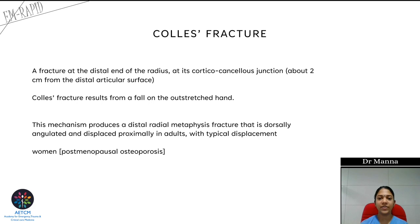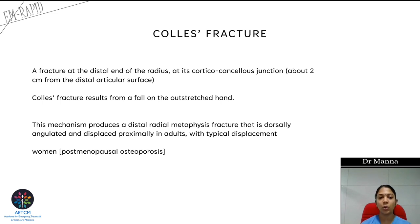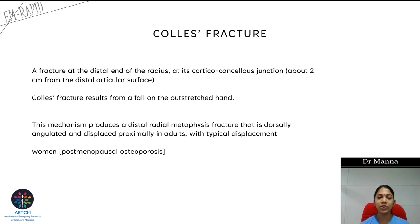Colles' fracture is a fracture at the distal end of the radius at the corticocancellous junction — 2 cm from the distal articular surface. It is an extra-articular fracture and usually occurs when a patient falls on an outstretched hand. The mechanism produces a distal radial metaphyseal fracture that is dorsally angulated and displaced proximally, with the distal fragment tilted and pushed proximally.